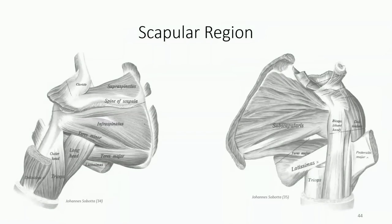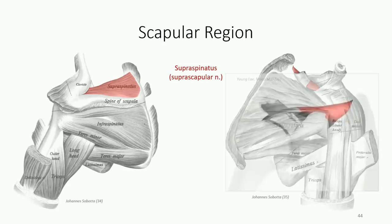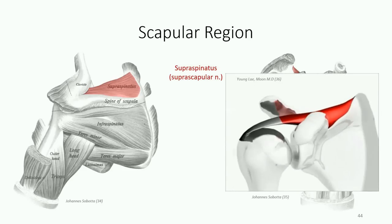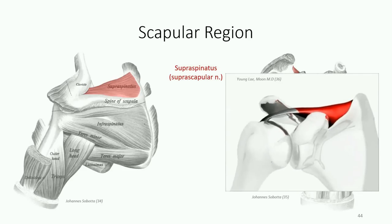In contrast to the thoracohumeral muscles originating off the trunk, the scapulohumeral muscles originate directly off the scapula itself. Four of these muscles converge onto either the greater or lesser tubercles of the humerus and are known as the rotator cuff muscles. As its name implies, supraspinatus originates off the supraspinous fossa. The tendon runs deep to the acromion process through the subacromial tunnel to insert on the greater tubercle of the humerus. Because of its superior course to the glenohumeral joint, the supraspinatus is an abductor of the shoulder rather than a rotator.